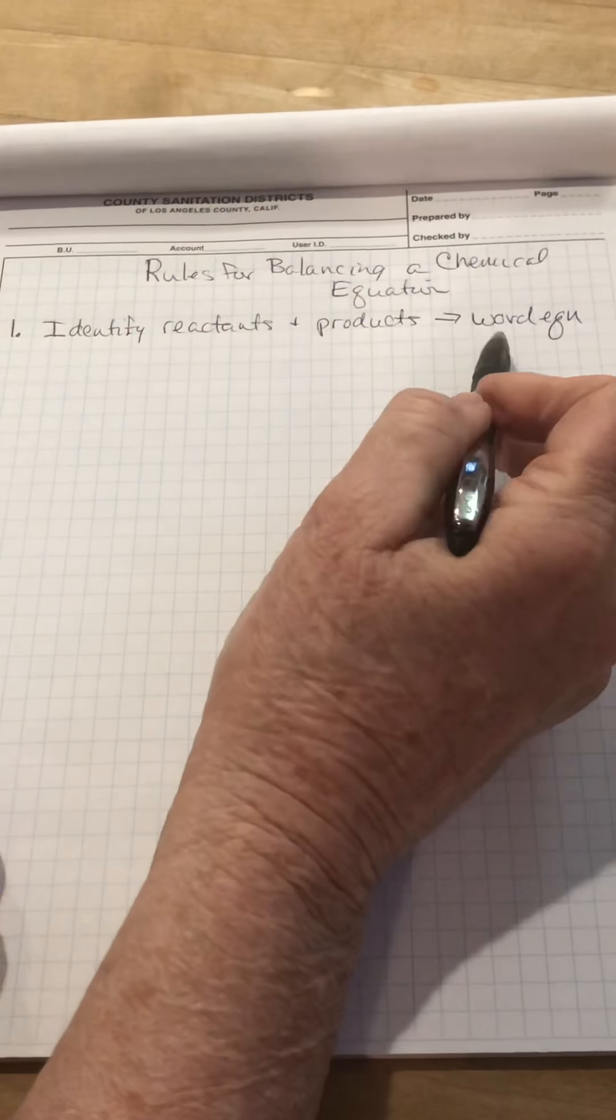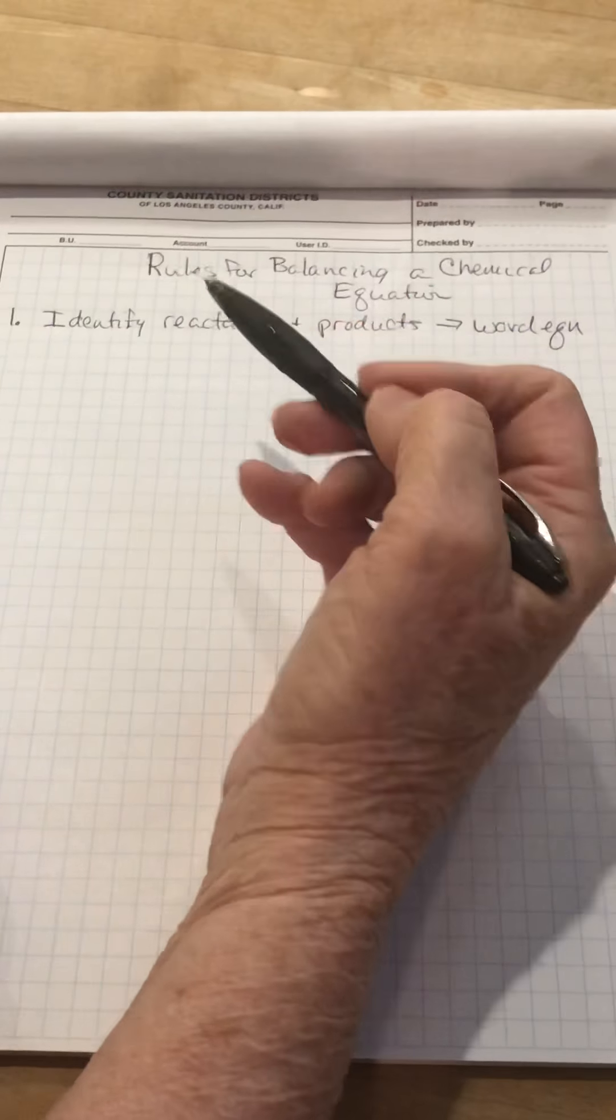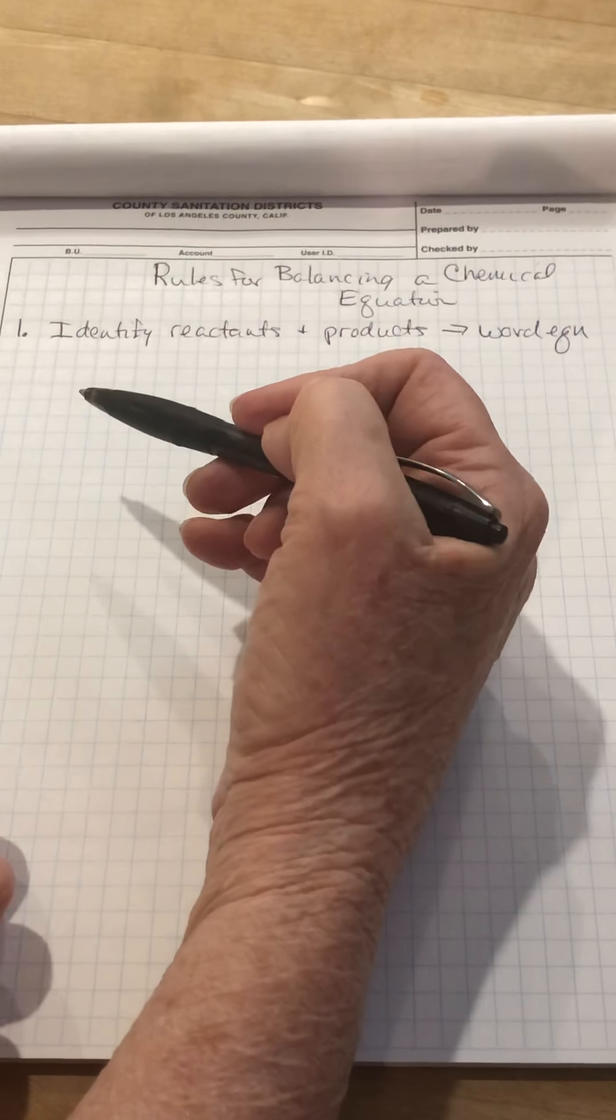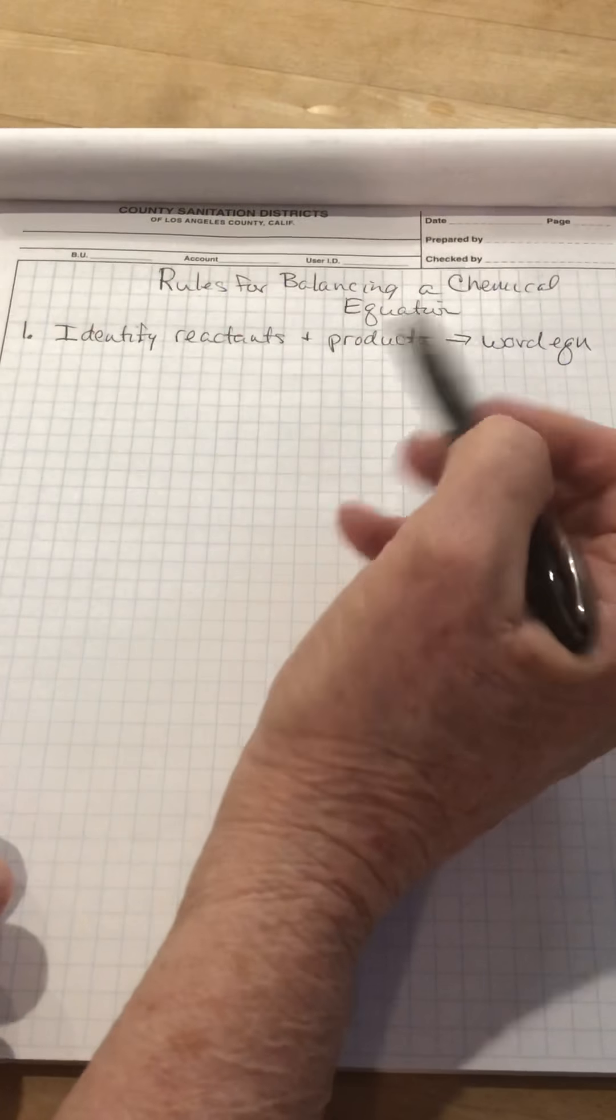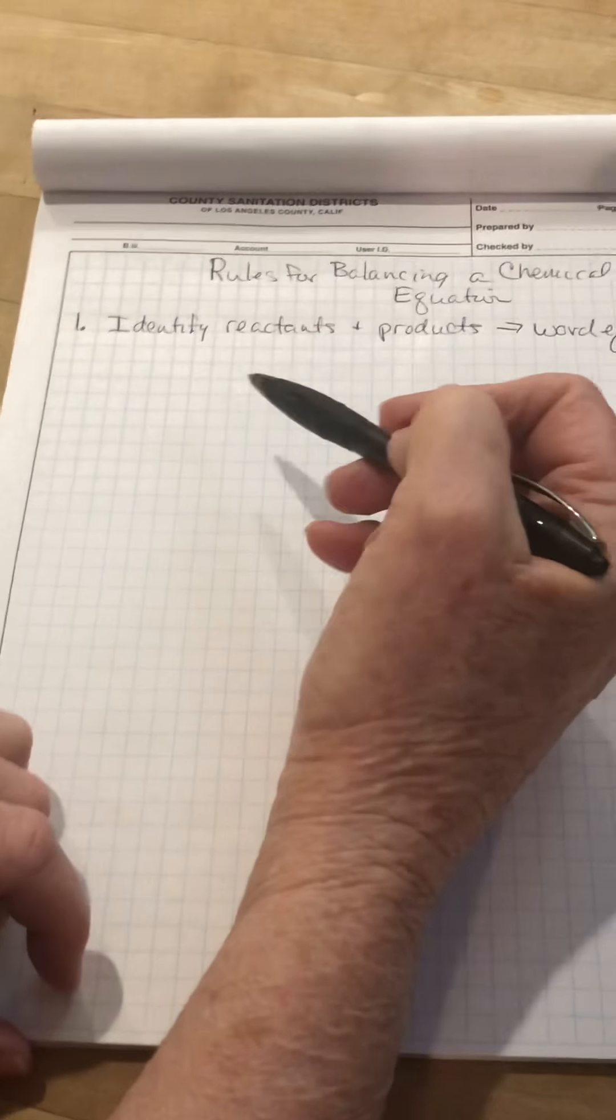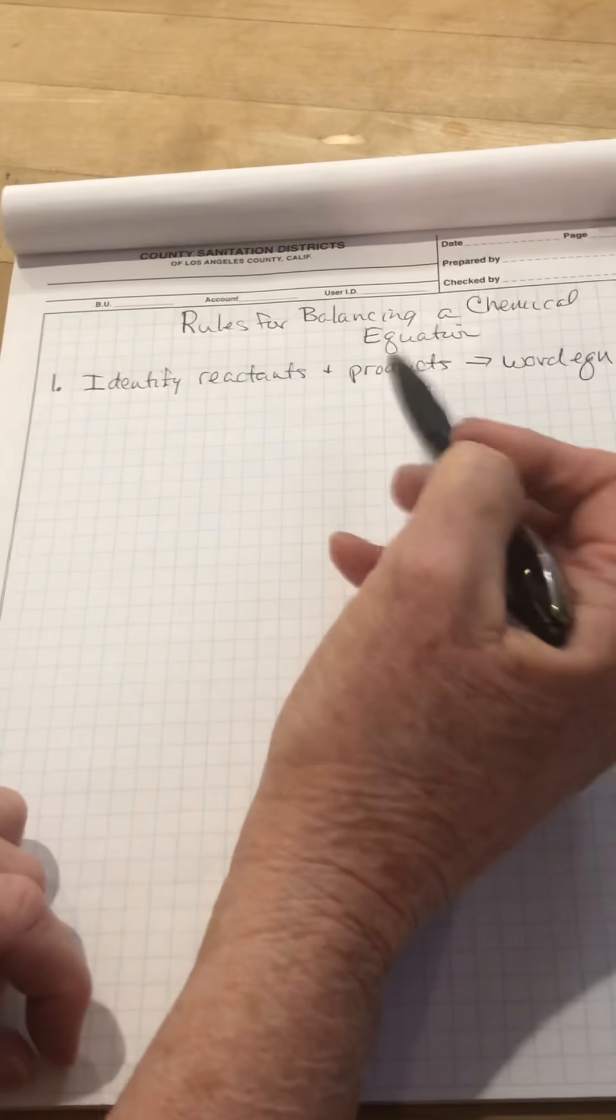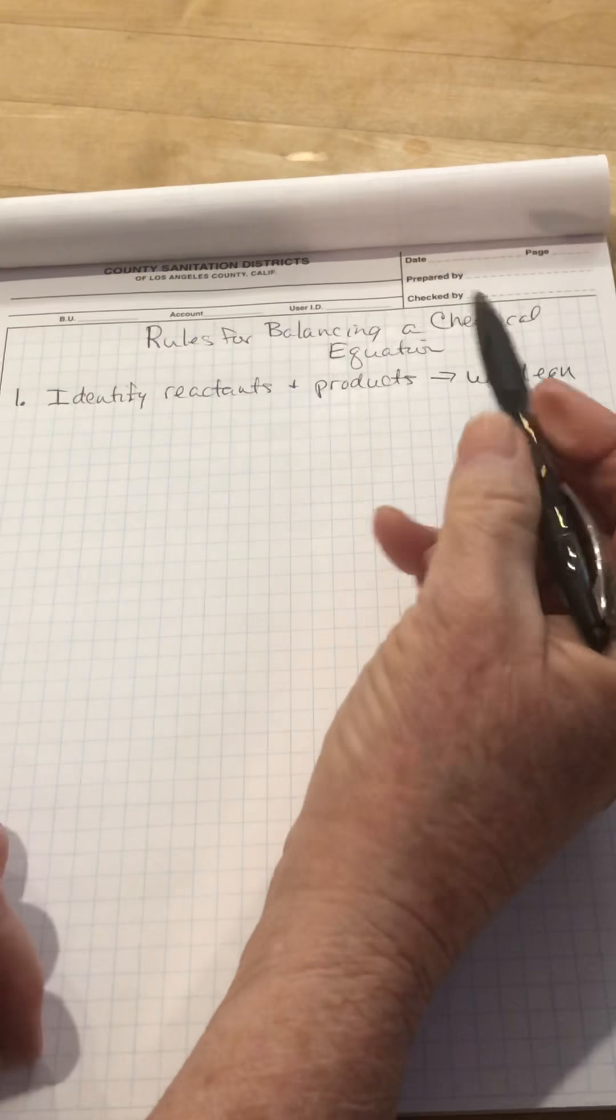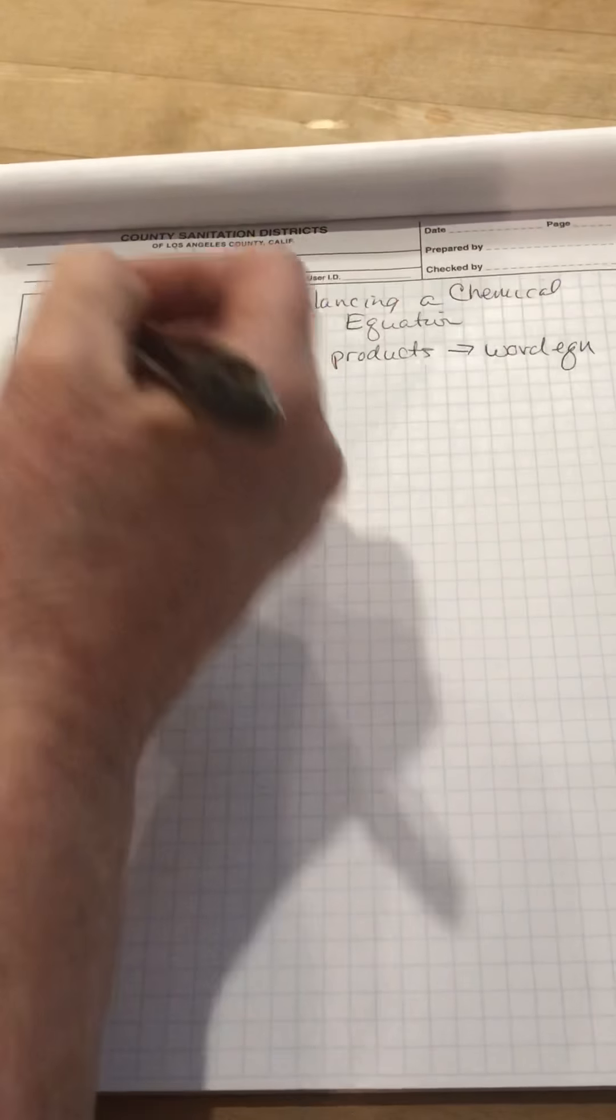This is only going to have to be done if you're working with a word problem, if the chemical reaction is buried within a sentence. For instance, when you turn your stove on in the kitchen and you ignite the gas, the natural gas is methane CH4. The methane reacts with oxygen to provide carbon dioxide, water, and heat. So you'd have to pull methane, oxygen, carbon dioxide, and water out as what's going on and write a word equation for that. So that isn't going to happen very often.